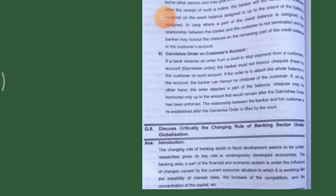These are the ways of terminating the relationship between banker and customer: first, mutual agreement; second, by notice; third, by death of customer; fourth, insanity of customer; fifth, insolvency of customer; sixth, winding up of business; seventh, assignment of balance in the customer's account; eighth, Garnishee order on the customer's account.